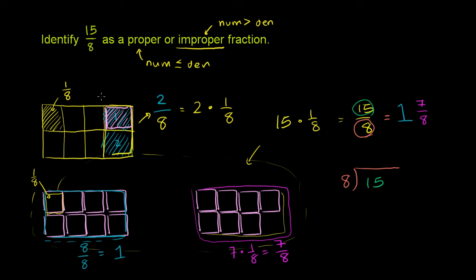You see that it's equal to, well 8 goes into 15 one time, because 2 times 8 is 16, so that's too big. So 1 times 8 is 8. You subtract 15 minus 8 is 7.